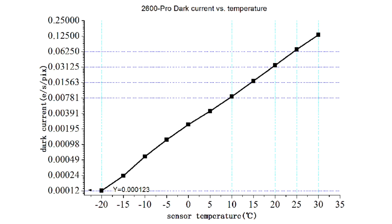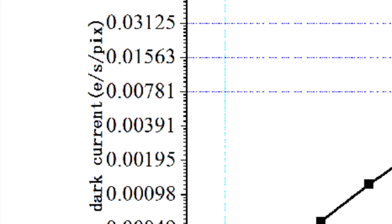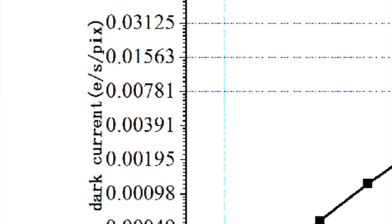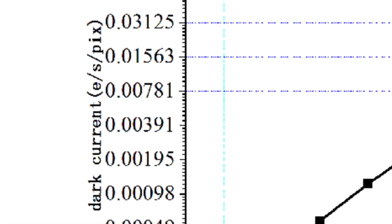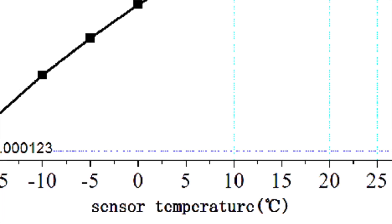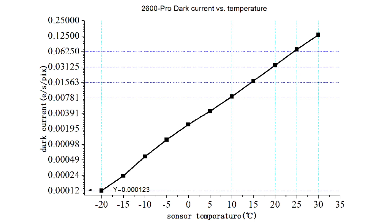So how does temperature affect dark current? Let's take a look at this graph for the ASI 2600MC camera. On the left vertical axis, we have listed how much dark current we collect during an exposure, labeled as E/S/PIX — meaning electrons per second per pixel. On the bottom horizontal axis, we have temperature listed in Celsius. As we browse through this graph, we can conclude that the colder we make our camera sensor, the less dark current we collect. Starting from the bottom left, we see the coldest temperature and the least electrons per second per pixel, and as we move through the graph, electrons per second per pixel increases as temperature increases. After all, dark current is temperature dependent.